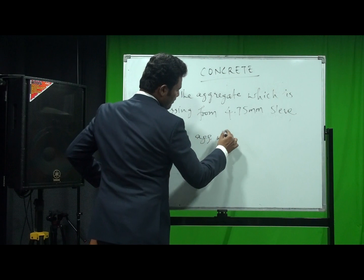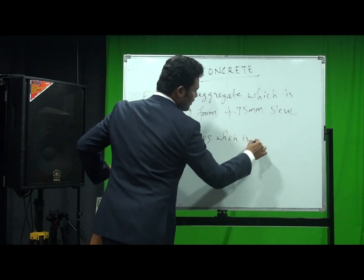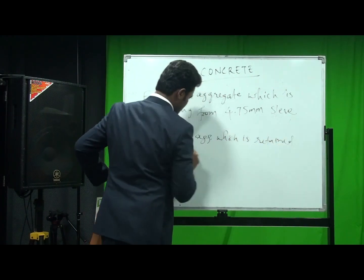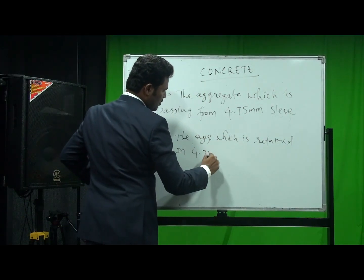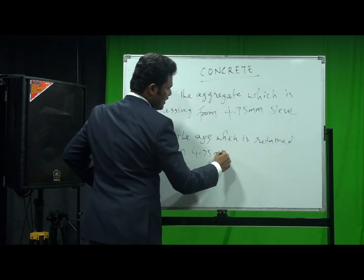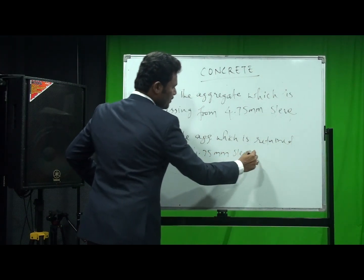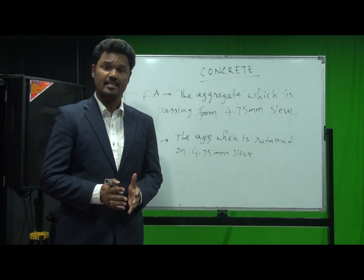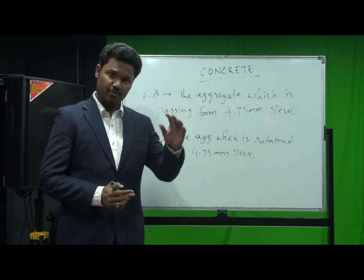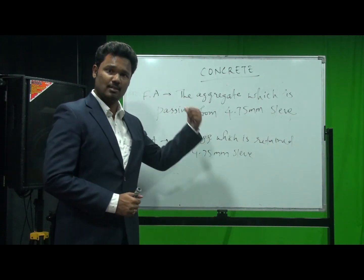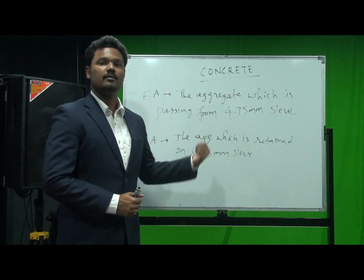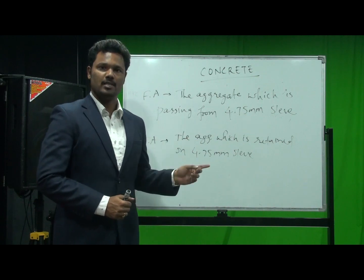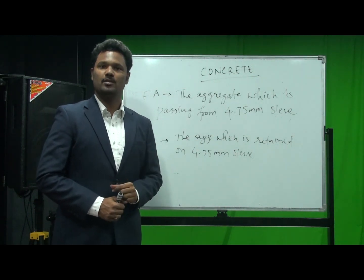The aggregate which passes through the 4.75 mm sieve is called fine aggregate, and the aggregate which is retained on the 4.75 mm sieve is called coarse aggregate.